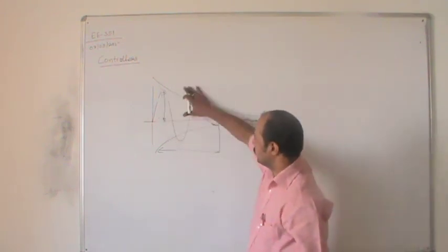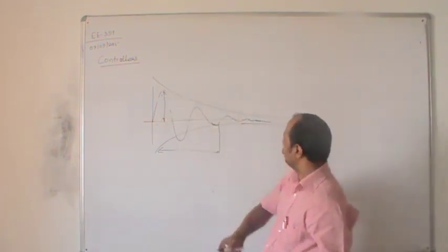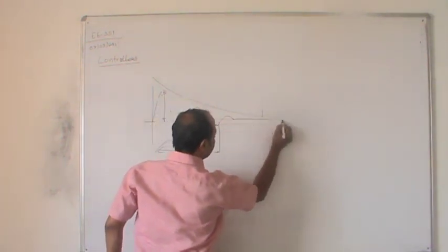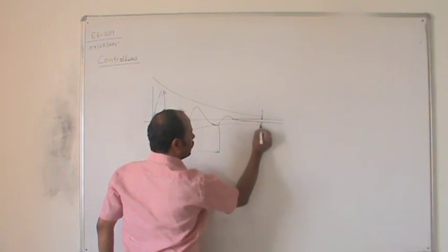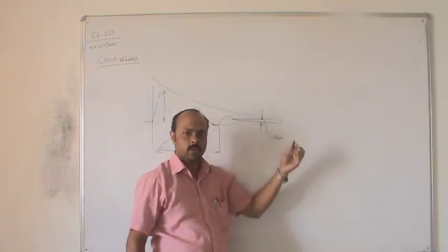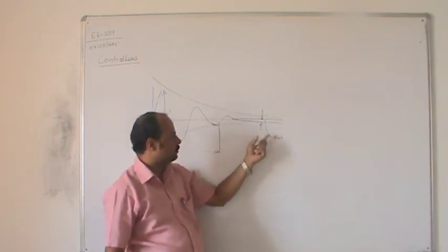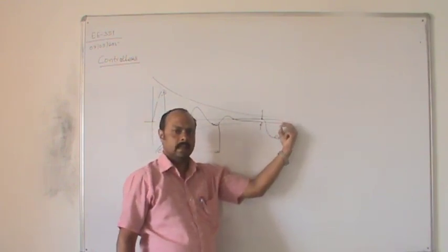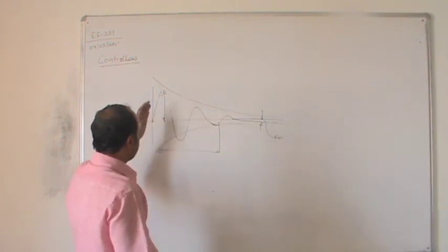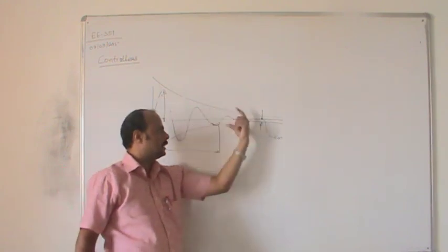We have discussed transients — we need to reduce the peak overshoot. Along with that, we will also have to improve the steady state error. If the required value differs from the actual result, that difference is the steady state error. To improve this error, we add an integral controller. Adding the integral controller along with the proportional control system will reduce the ESS, improving the steady state response. Adding proportional-derivative-integral will take care of both transients and steady state.